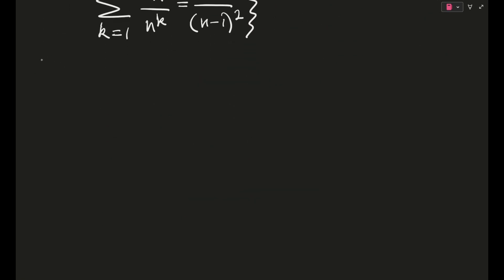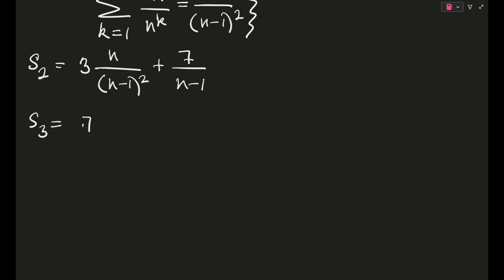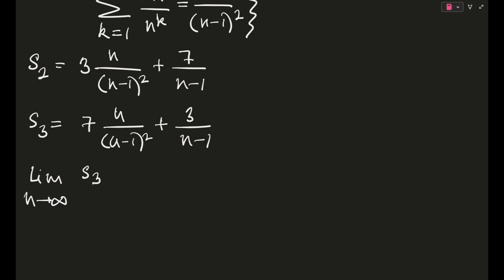Substituting, S2 becomes 3·[n/(n−1)²] + 7/(n−1), and S3 becomes 7·[n/(n−1)²] + 3/(n−1). These are the expressions for S2 and S3. Since we need lim(n→∞) of S3/S2, everything is now in terms of n, so it's pretty straightforward.